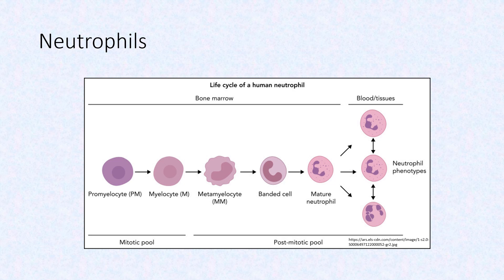Neutrophils are a type of white blood cell that are released from the bone marrow. Immature neutrophils are usually present in low amounts in the blood. Generally, immature neutrophils mature before they are released into the blood to help fight infection.